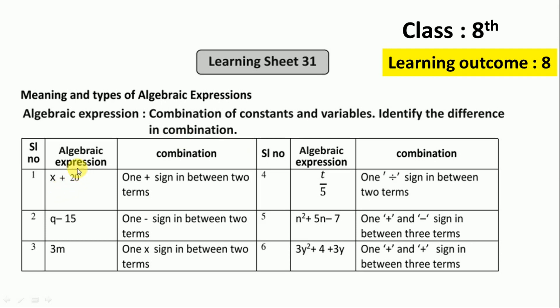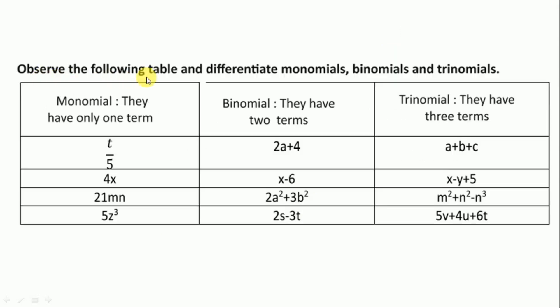If there is a plus or minus, then there are two terms in the algebraic expression. If it is multiplication or division, then it is only one term.